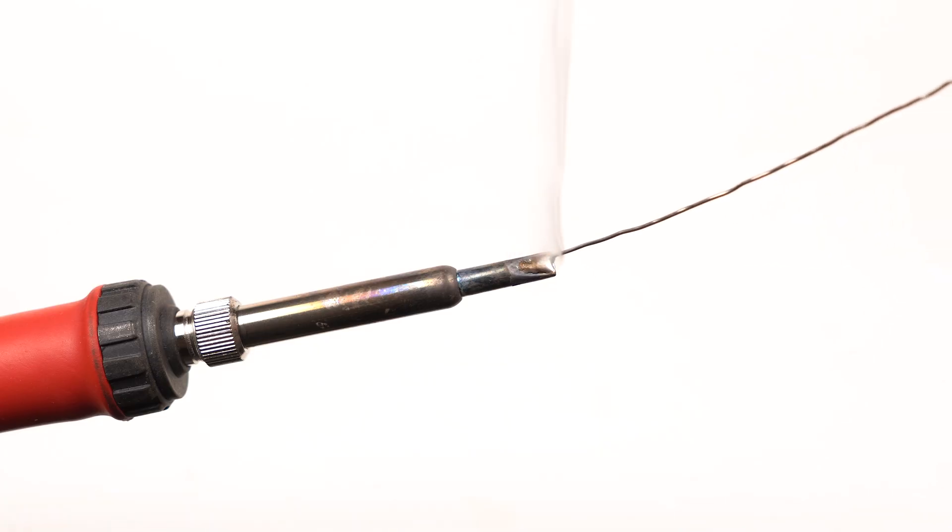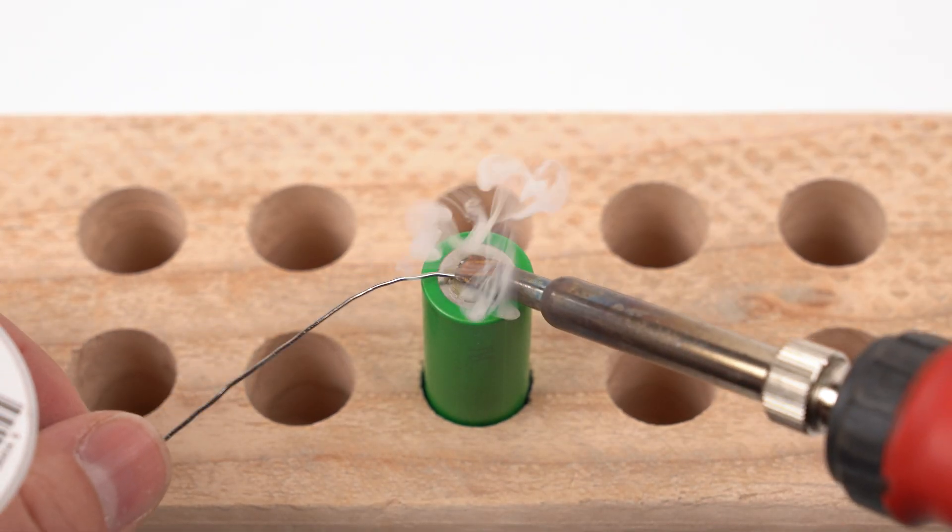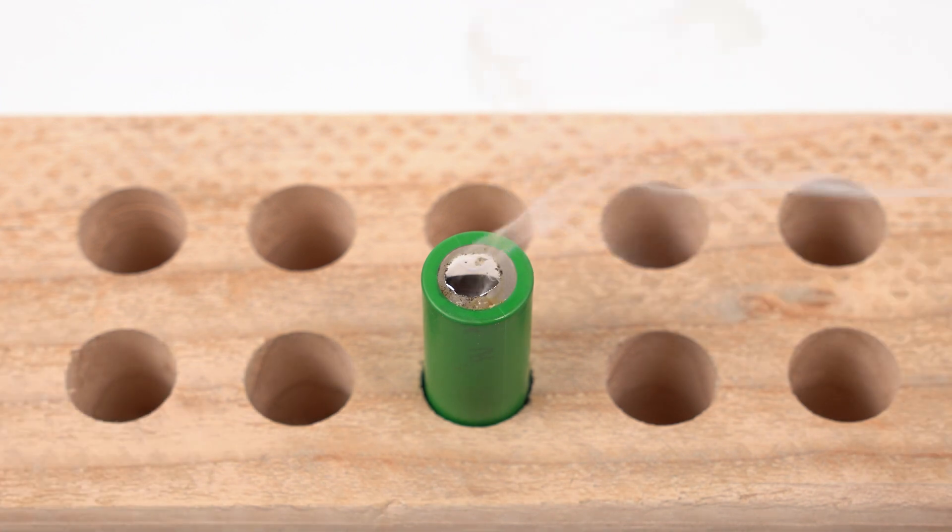Thoroughly tin the tip of your soldering iron. Generously apply solder to the ends of each cell. Don't linger more than a second or two or you may damage the cell.